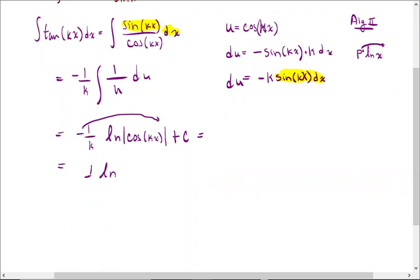that'll give you the natural log, 1 over k times the natural log of cosine(kx) to the negative 1 power. And if it's to the negative 1 power, that would be like 1 over cosine. And we remember from previous math classes that 1 over cosine(kx) is actually just secant(kx).